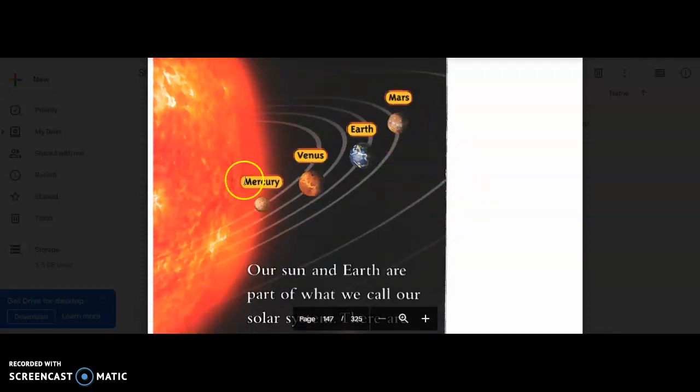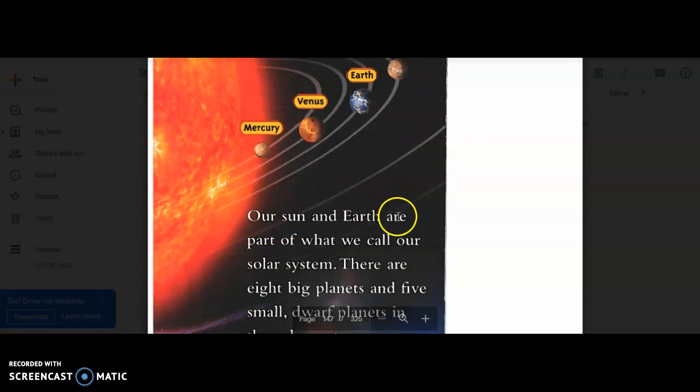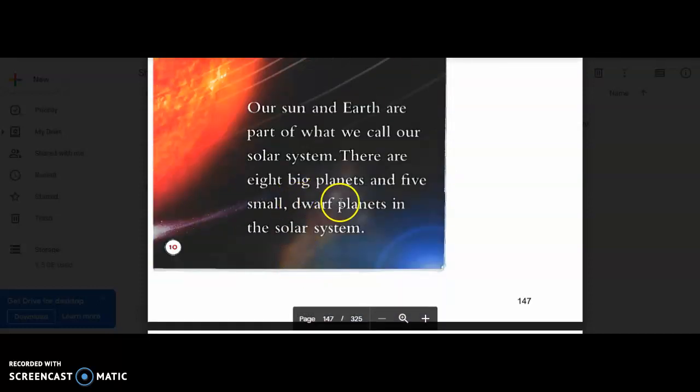And we have an illustration here with labels. There's Mars here, Earth, Venus, and Mercury. So it's shown us the order that the planets are in when they orbit the sun. Our sun and Earth are part of what we call our solar system. There are eight big planets and five small dwarf planets in the solar system.